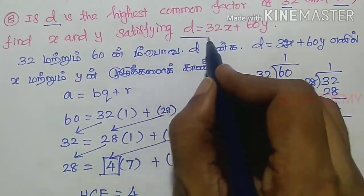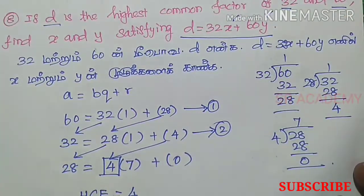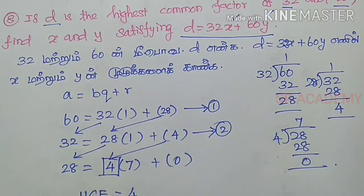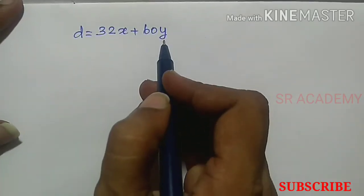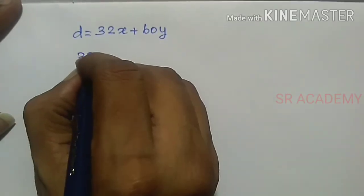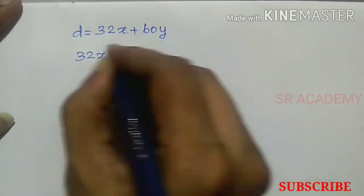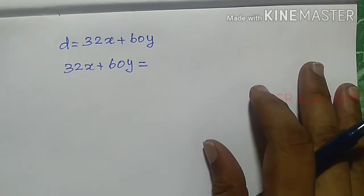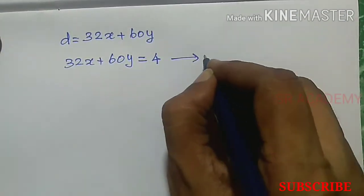Now we have the equation D equals 32X plus 60Y. Since D equals 4, we have 32X plus 60Y equals 4. Let this be equation number 3.